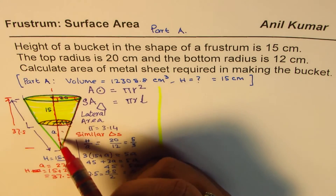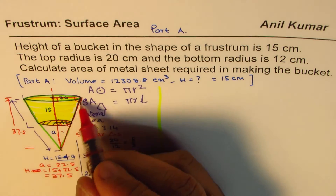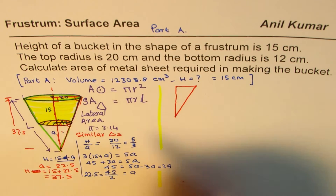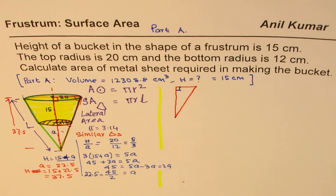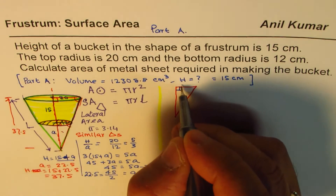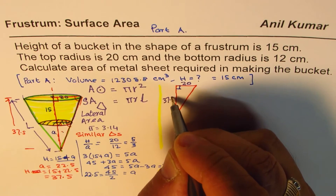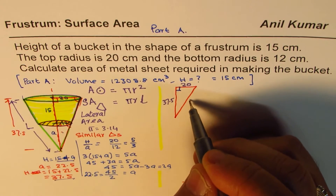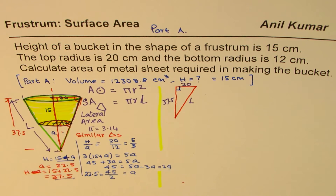Now, once we know the total height of 37.5 and the base radius of 20, we can find the slant side using the Pythagorean theorem. So we consider this big triangle and calculate: L² = 20² + 37.5², so L = √(20² + 37.5²).